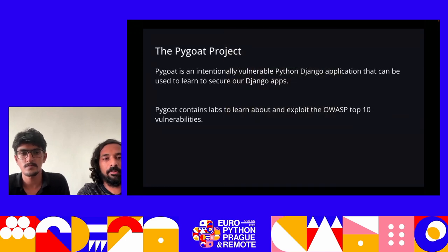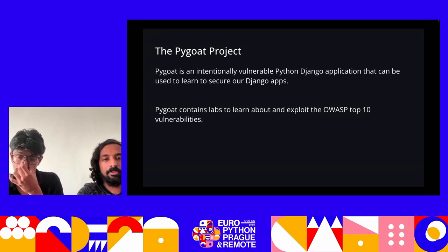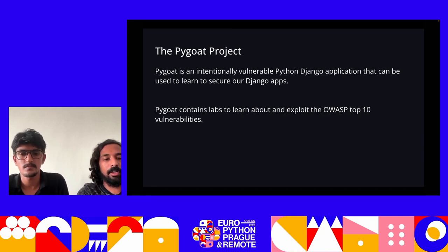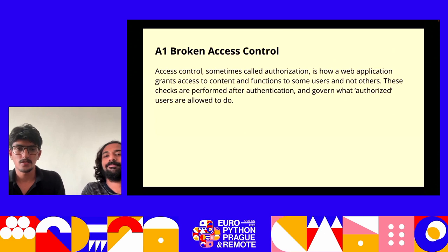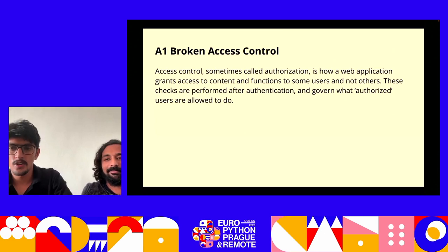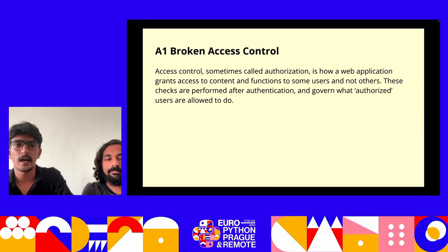Going back to the topic of our presentation, we'll be covering PyGoat. PyGoat is an intentionally vulnerable Python Django application, so we can use PyGoat to learn and exploit the OWASP Top 10 vulnerabilities. Tameen will walk us through the initial set of vulnerabilities. So now we can move to the in-depth details of OWASP Top 10 and its demonstration using PyGoat.